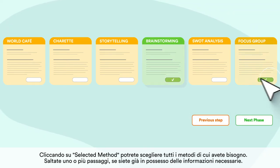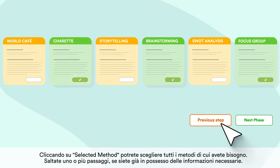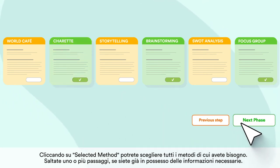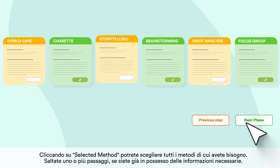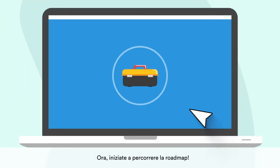Click Select Method to choose all methods you need. Skip one or multiple steps if you already have the data needed. Now start to travel the roadmap.